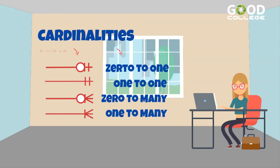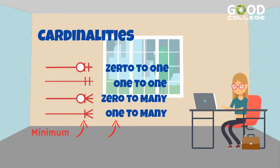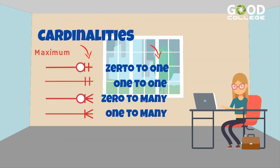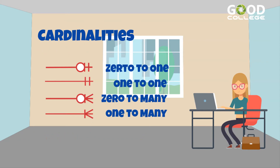The minimum cardinality can be 0, represented by a circle, or 1, represented by a vertical bar. The maximum cardinality can be 1, represented by a vertical bar, or many, represented by a Crow's Foot. Because of the representation of the many cardinality, this notation is called Crow's Foot.